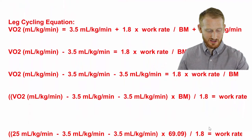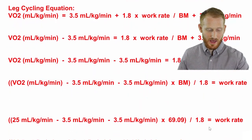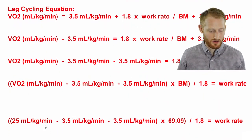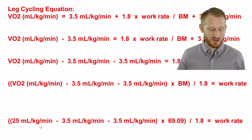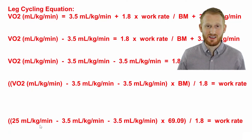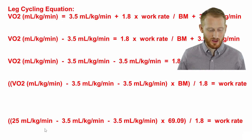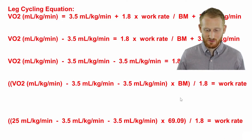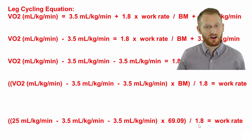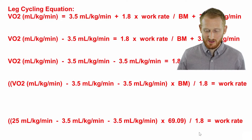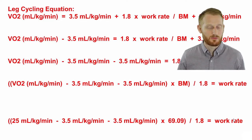Let's go ahead and plug in our values. So 25 mls per kg per minute was the prescribed exercise intensity in terms of oxygen consumption. So 25 minus 3.5 minus 3.5 times 69.06, which is the body mass, divided by 1.8, and all of this is going to give you the work rate in kg meters per minute.